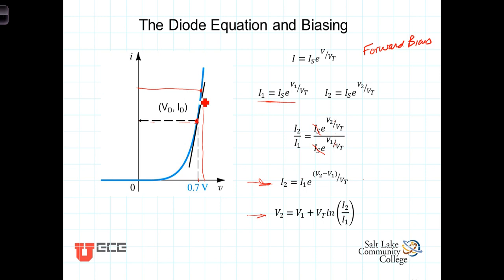For example, let's assume that we know that this first bias point corresponds to 1 milliamp, so I sub 1 is equal to 1 milliamp, and V sub 1 is equal to 0.7 volts. We would like to know how much change in current will arise if we change the voltage by 0.05 volts. In other words, V2 increases to 0.75 volts.